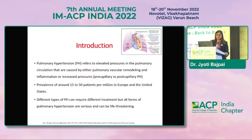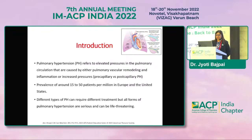Let's start with the introduction. Pulmonary hypertension refers to elevated pressure in the pulmonary circulation caused by either pulmonary vascular remodeling and inflammation, or increased pressure known as precapillary or postcapillary pulmonary hypertension. Its prevalence is around 50 patients per million in Europe and the United States. Different types of pulmonary hypertension can require different treatment, but all forms are serious and can be life-threatening.